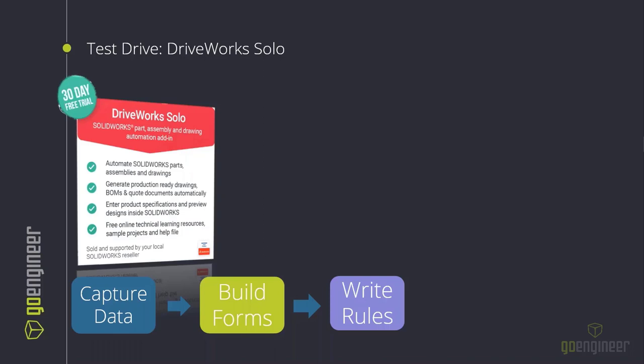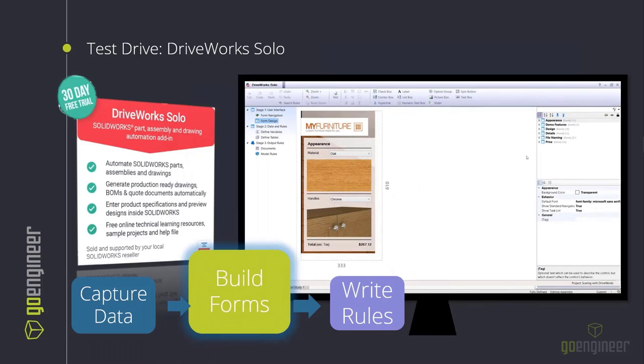In DriveWorks Solo you get the added benefit of creating text documentation, combining a plethora of functions with lookup tables for design automation. Before jumping into the 30-day free trial, we strongly recommend contacting our sales reps so we can give you the information and resources you need to be successful in those 30 days. DriveWorks Solo has a more robust interface than Express. You can build forms that responsively adapt based on input parameters — for example, selecting oak, pine, or poplar can populate different images on the form, making it easy to communicate options to the end user with no room for doubt.